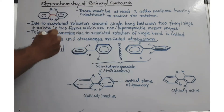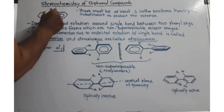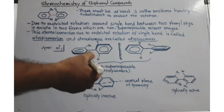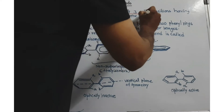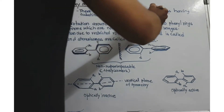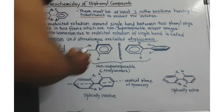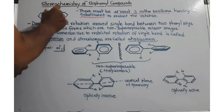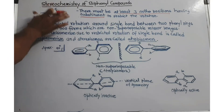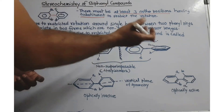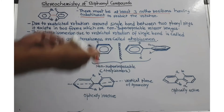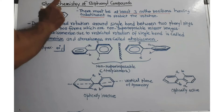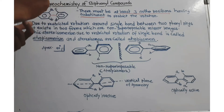What is required? The compound must have restricted rotation. To restrict that free rotation, there must be at least three ortho positions blocked — that is, at least three ortho positions having sufficiently large substituents. If those substituents are present, the rotation about the carbon-carbon single bond is restricted, and it can form a non-superimposable mirror image.